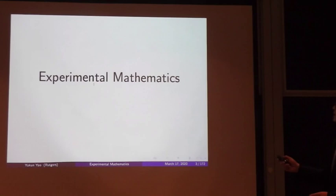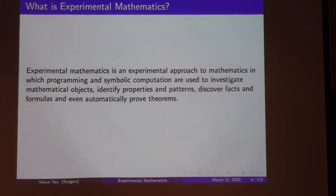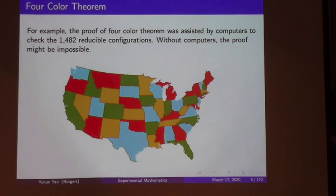So what is experimental mathematics? It is an experimental approach to mathematics in which programming and symbolic computation are used to investigate mathematical objects, identify properties and patterns, discover facts and formulas, and even automatically prove theorems. Here's a map of continental USA colored with four colors. In the proof of the four-color theorem, computers were used to check more than 1,000 reducible configurations — without computers, the proof might be impossible.